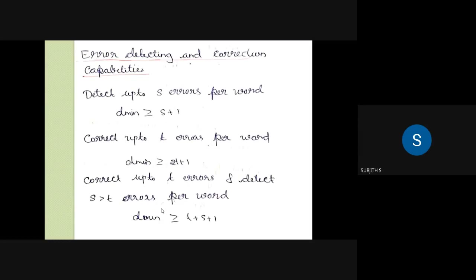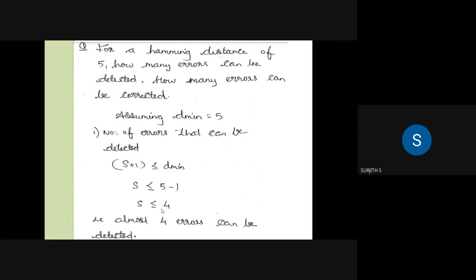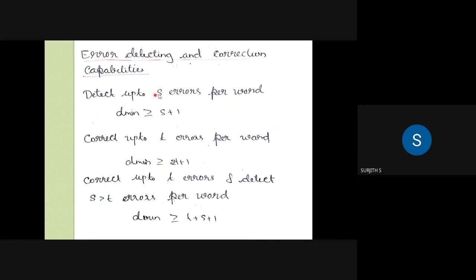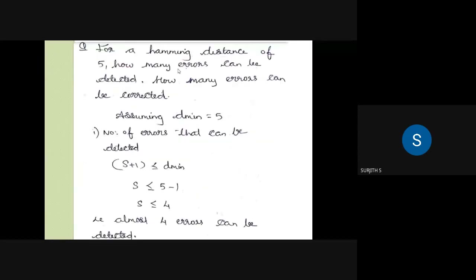I will explain the same example. This is the Hamming distance — it will detect the errors and correct the errors. Now I will show you a little bit of a problem: for a Hamming distance of 5.